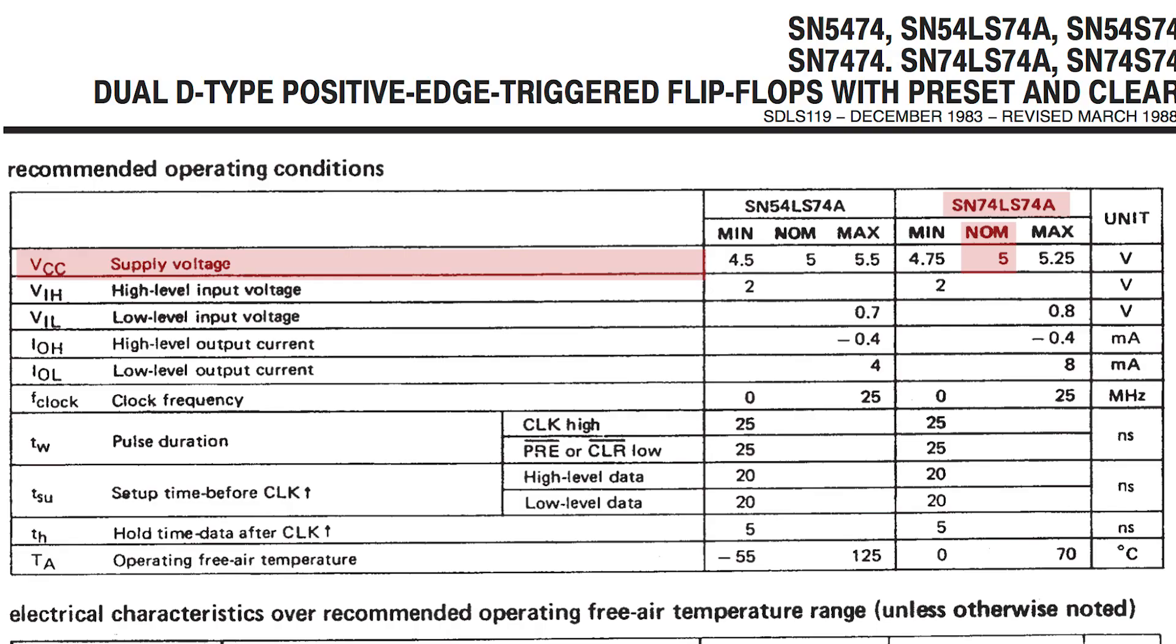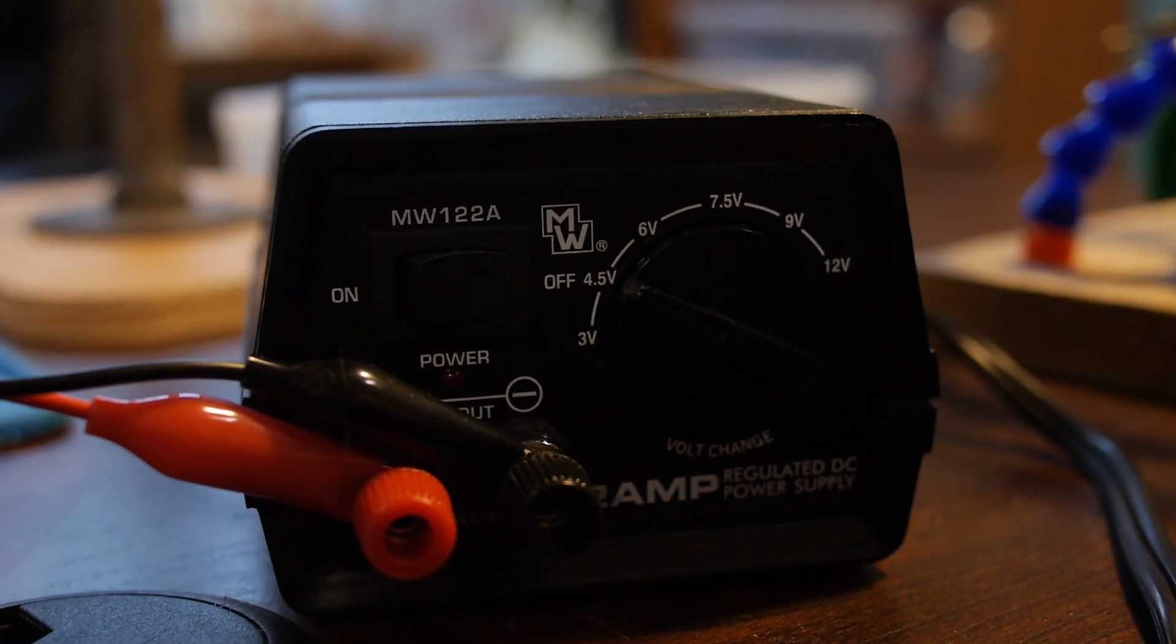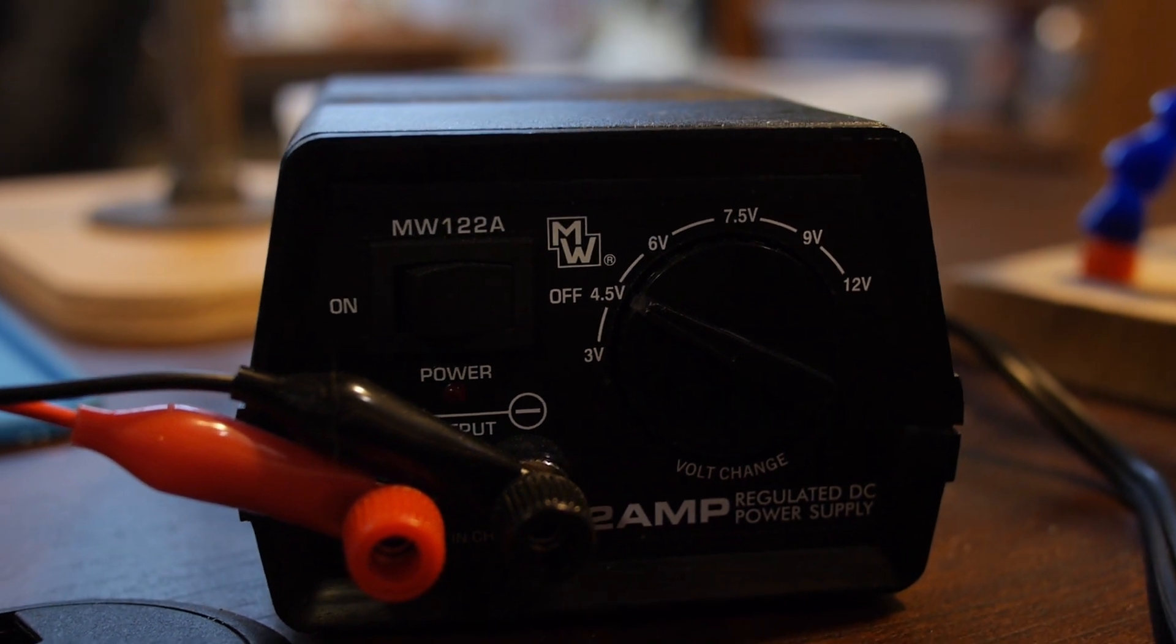The chip has a nominal voltage of 5 volts. My little desktop power supply only has typical battery voltages: 3, 4.5, 6, 7.5, 9, and 12. So I'm going to use 4.5 volts for the demonstration, a little less than nominal, but it'll work.